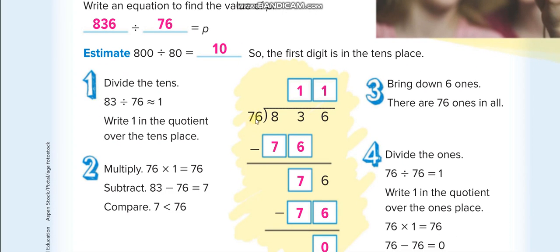We have to find out: 76 times what will give me 83 or less than that? We know that 76 times 1 is 76, and 76 times 2 would be more than 83, so we take it times 1, which gives 76. Then the next step, we subtract.